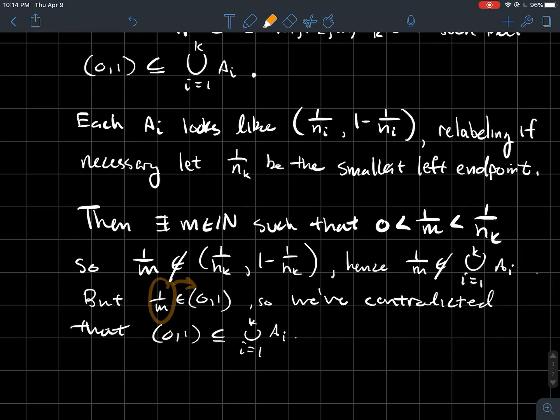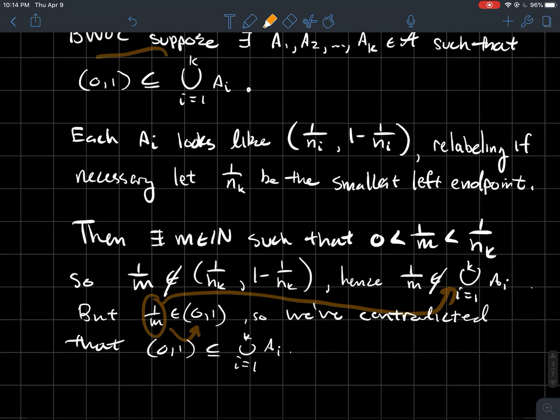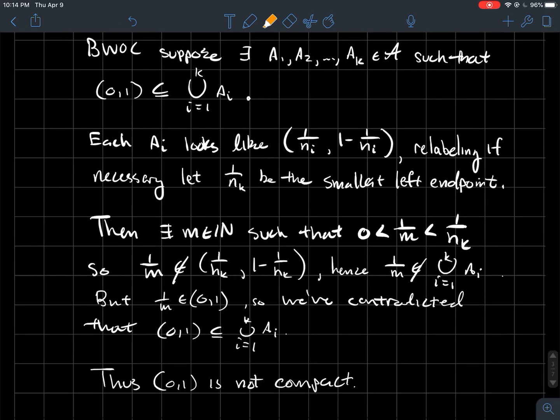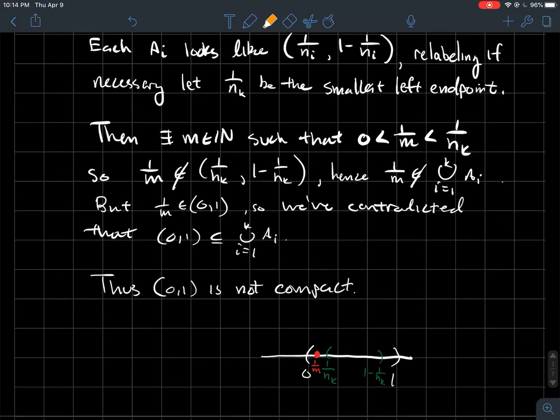But wait a minute. 1 over M is definitely in this interval from 0 to 1. So what we've done is found a point that lives in here from 0 to 1 but does not live in the union of these things. So how on earth is it possible up here that the union of only K of those things cover 0, 1? And I think I've got a picture for you.